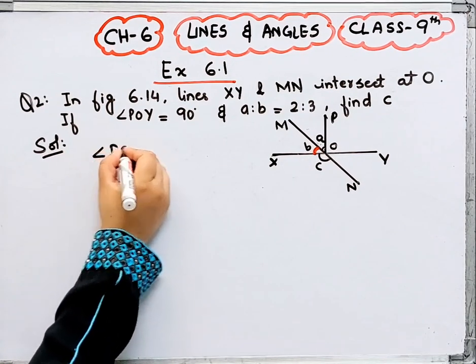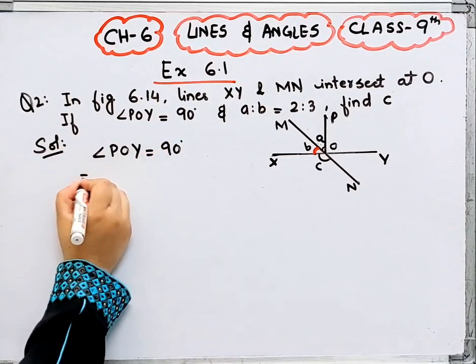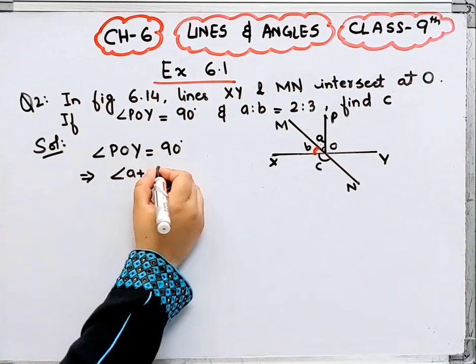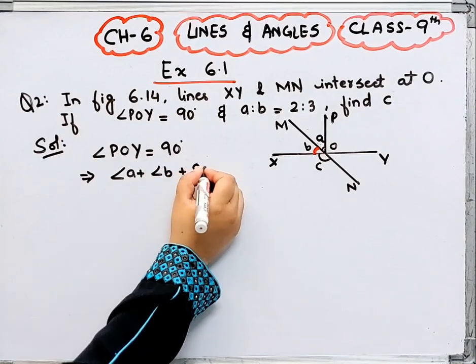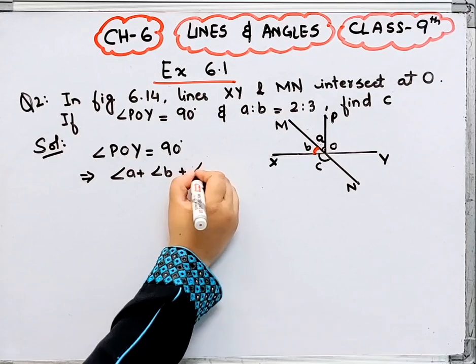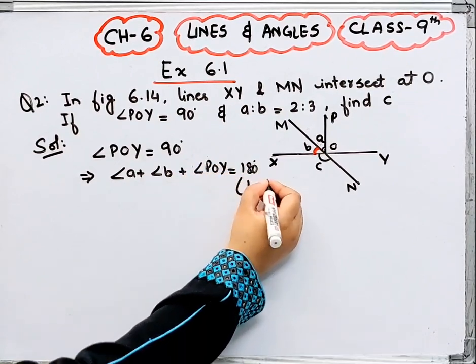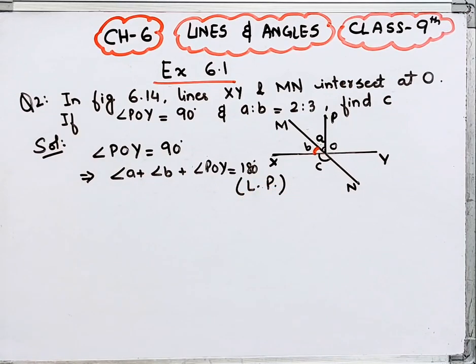Here is given that angle POY is equal to 90 degrees. This implies that angle A plus angle B plus this angle, angle POY. How much will POY be? Why will this be 180? Because they are forming a linear pair.